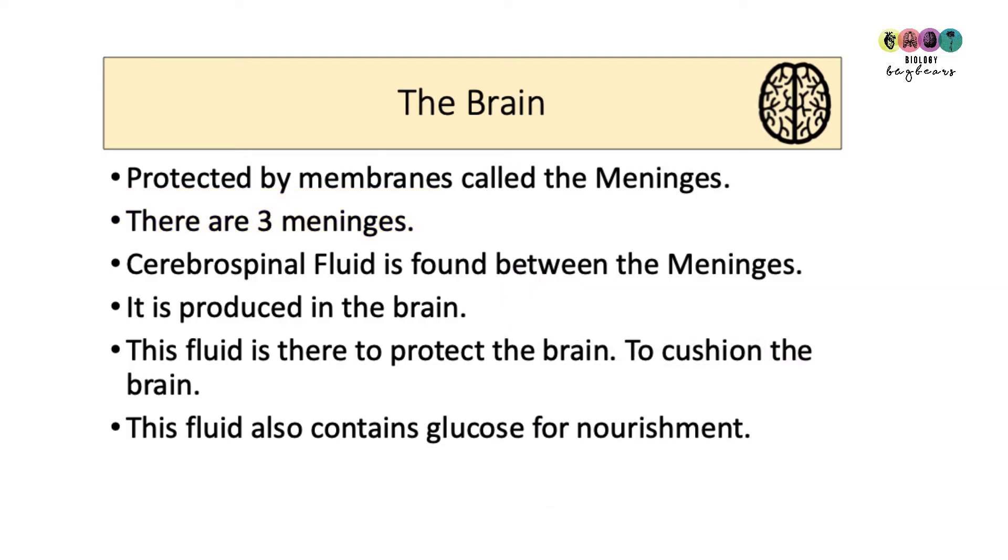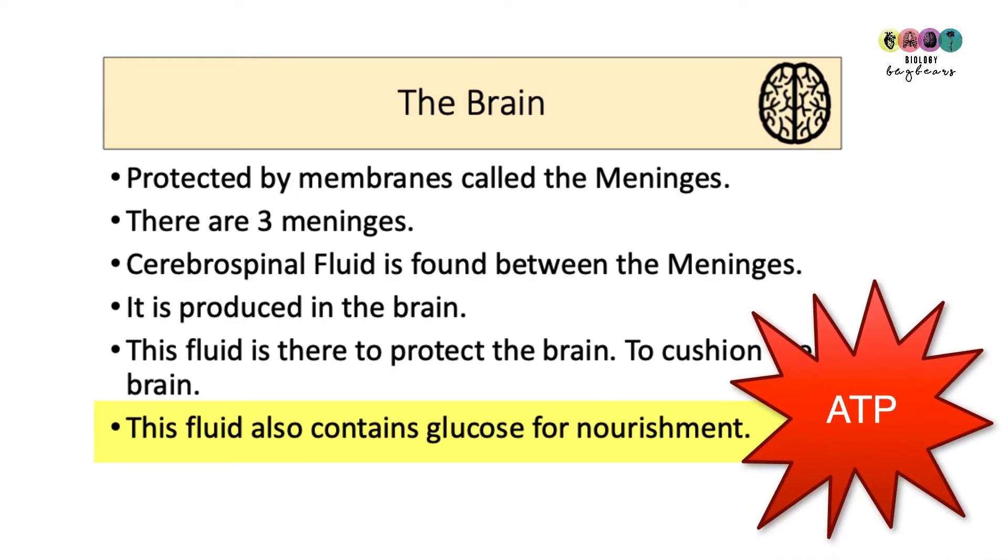In between each of these membranes and bathing the brain is this liquid known as cerebrospinal fluid. It's produced in the brain and it's there to protect it. It cushions the brain from impact and helps support the brain as well. The fluid also contains glucose for nourishment which is really important because the brain needs a lot of energy so there'll be a lot of respiration going on.